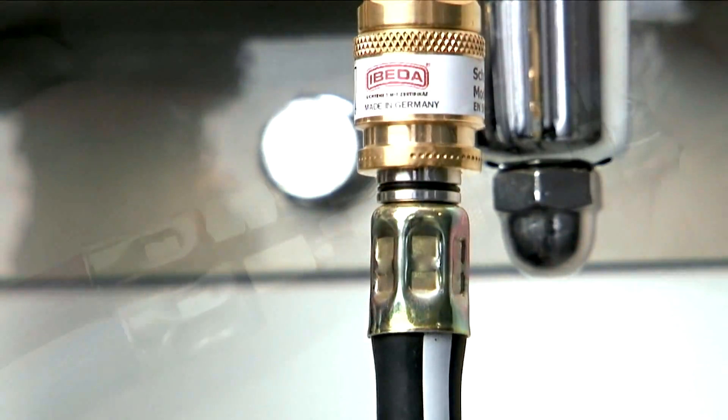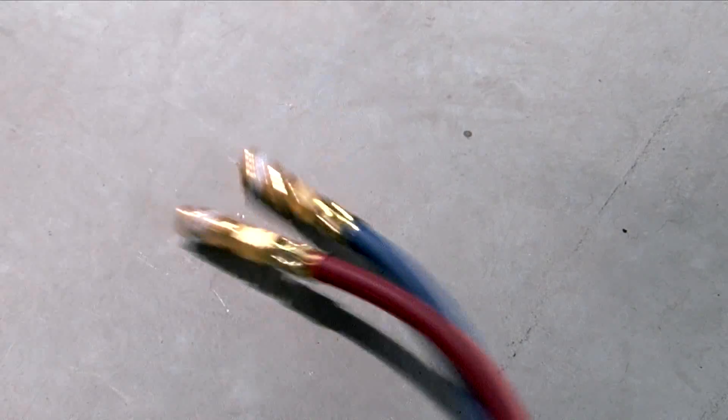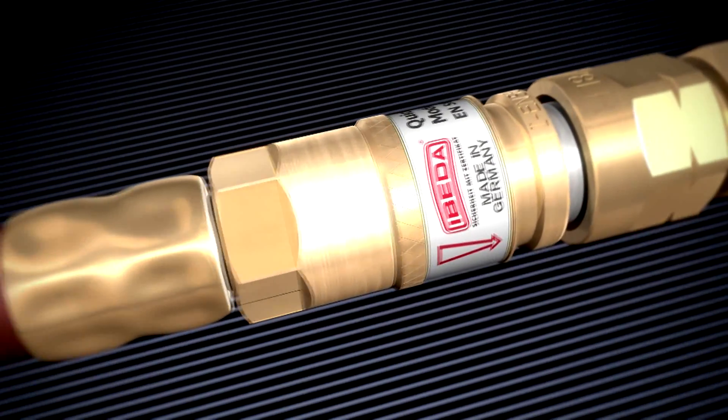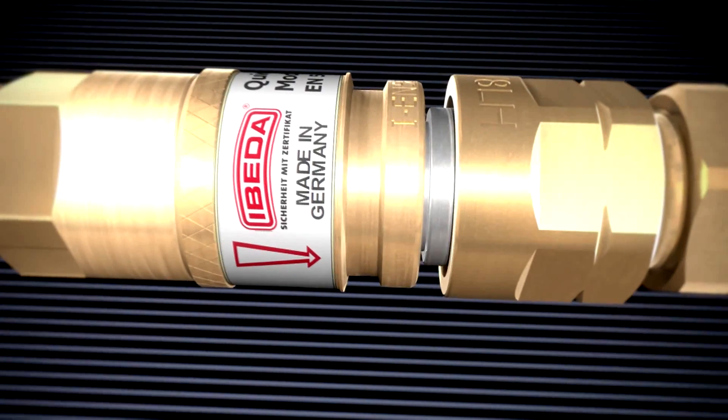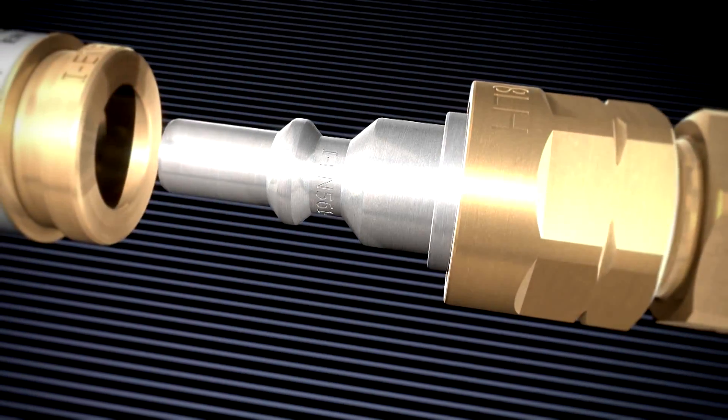EBITDA hose couplings were developed in collaboration with and for the industry. They are very robust and have a long service life. Hose couplings, manufactured in accordance with EN 561 and ISO 7289, comprise two joining elements, a coupling pin and a coupling body.